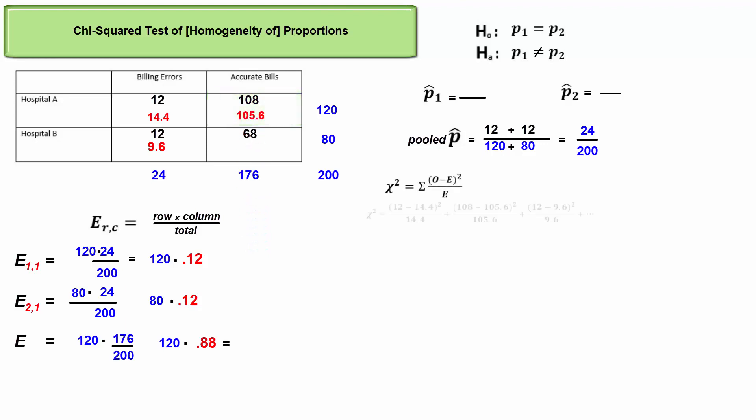We now follow the chi-squared test statistic formula for the component in each cell and add the components to get a test statistic of chi-squared equals 1.14.